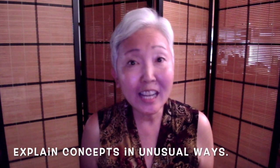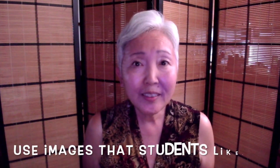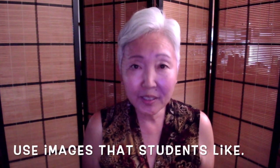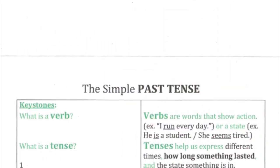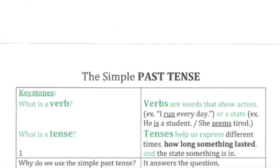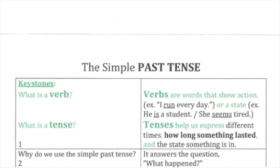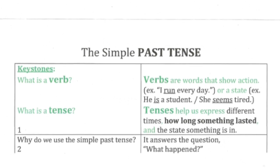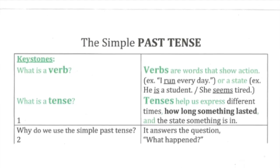What if we try two things? First, explain a concept in an unusual way. And second, use images that relate to what a particular grade level likes. Let's take a look at a grammar lesson for elementary or middle school students. Following Cornell Notes format, we see basic questions on the left and answers on the right. Please pause the video so you can read these blocks.